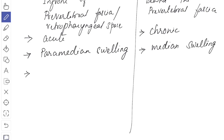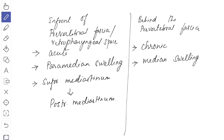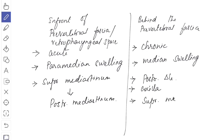In front of the pre-vertebral fascia, the infection may extend to the superior mediastinum and then into the posterior mediastinum. Whereas behind the pre-vertebral fascia, the infection spreads to the posterior triangle and the lateral wall of the axilla through the axillary sheath, and it spreads through the superior mediastinum.